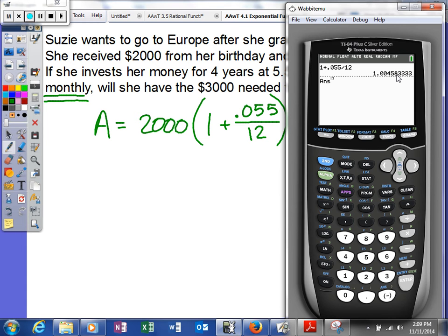So if you just hit the caret key or second negative, it will allow you to bring the answer up from the last problem. And that way our answer is going to be a little bit more accurate. So we'll raise to the 12 times 4 power.